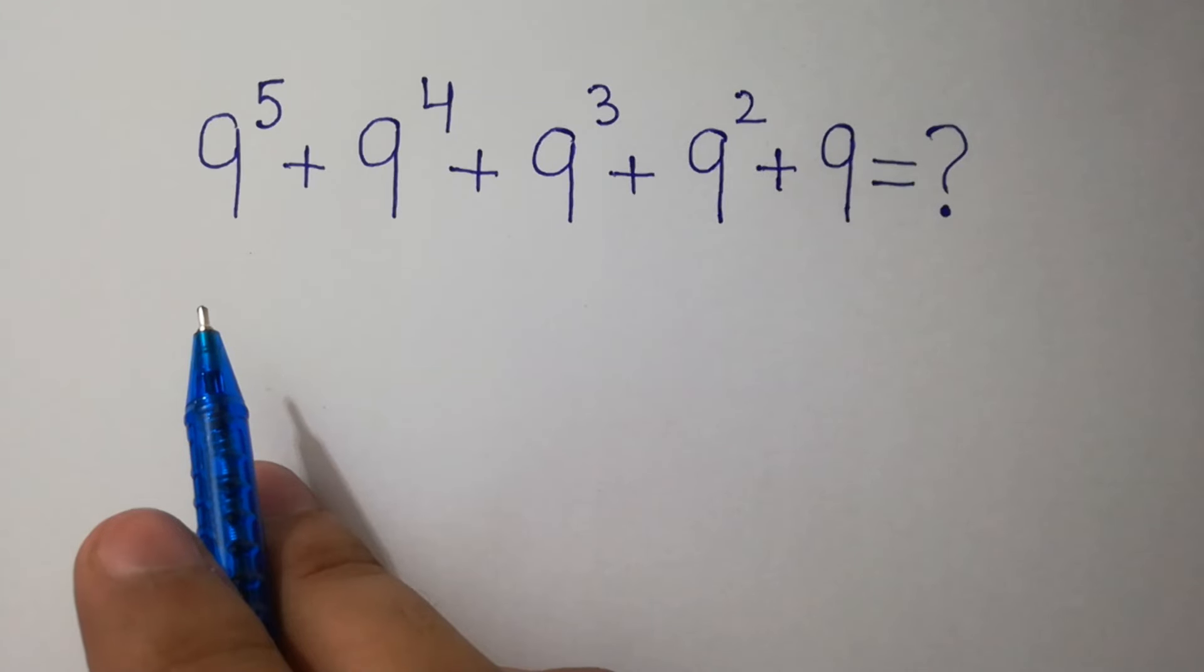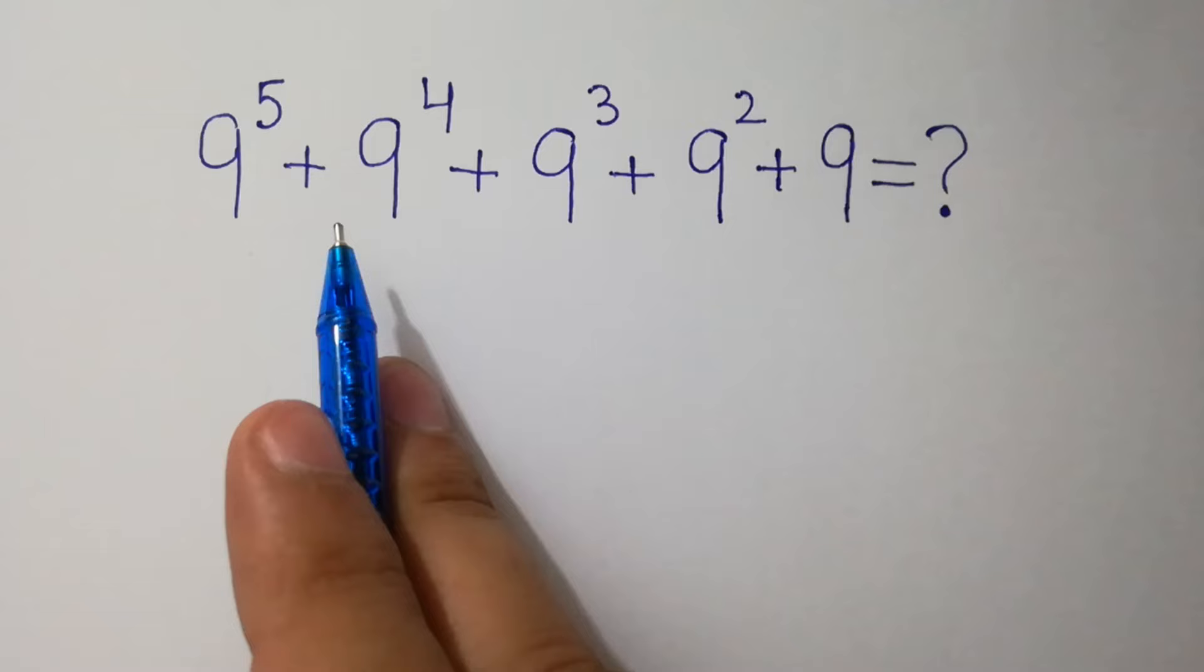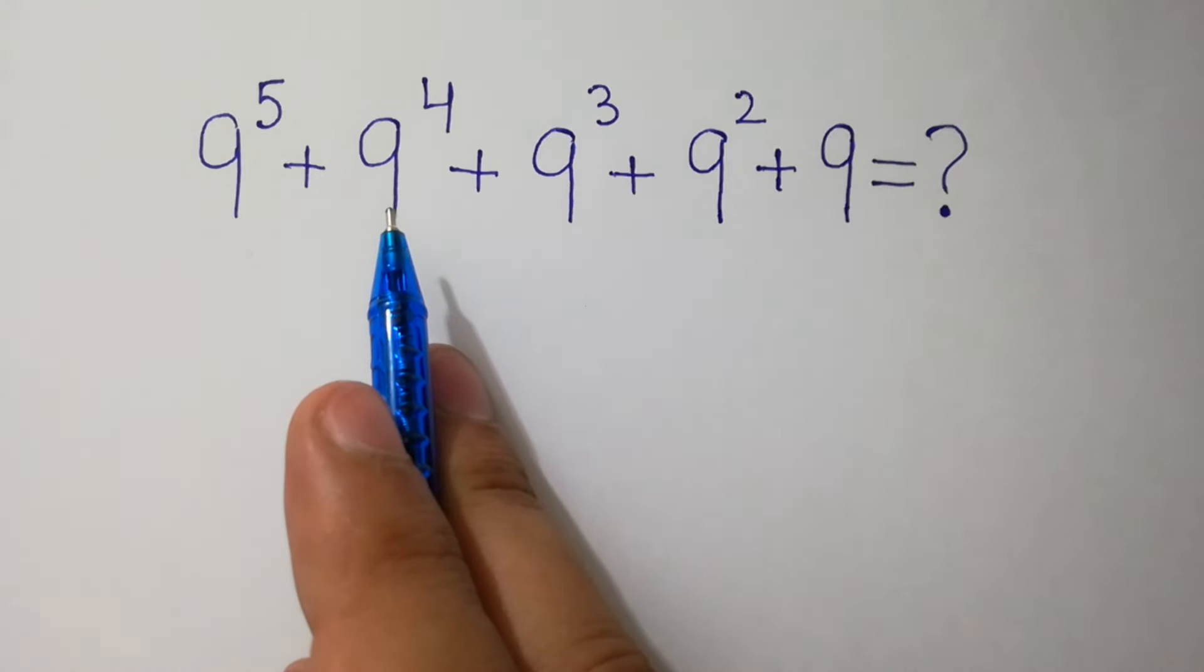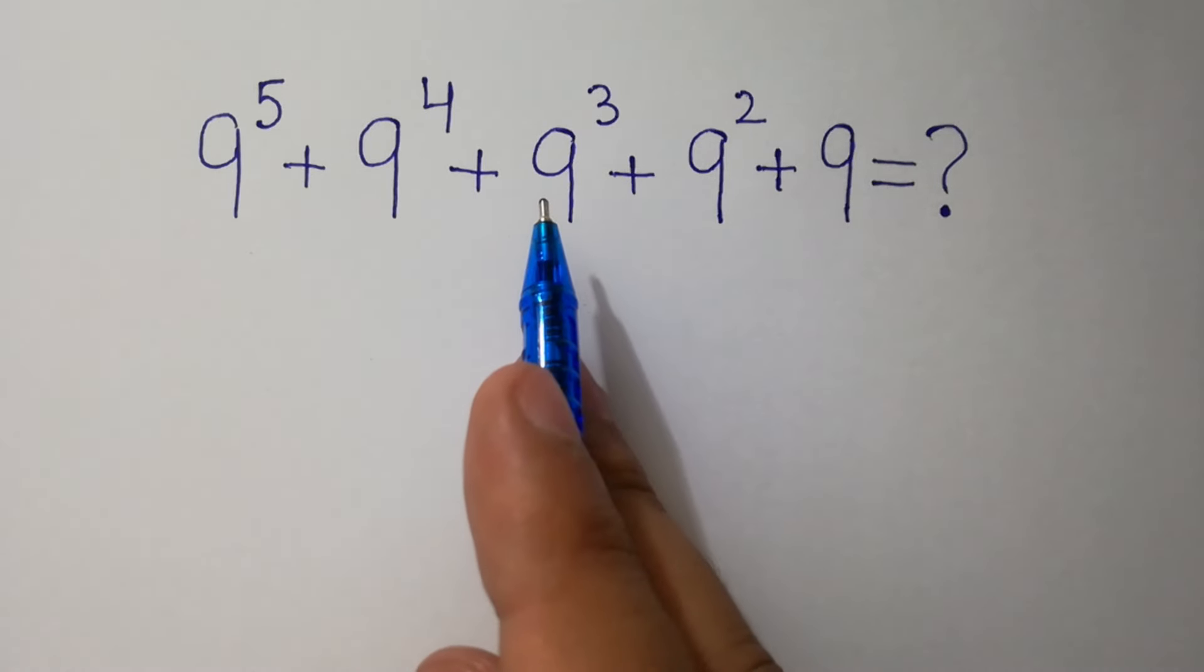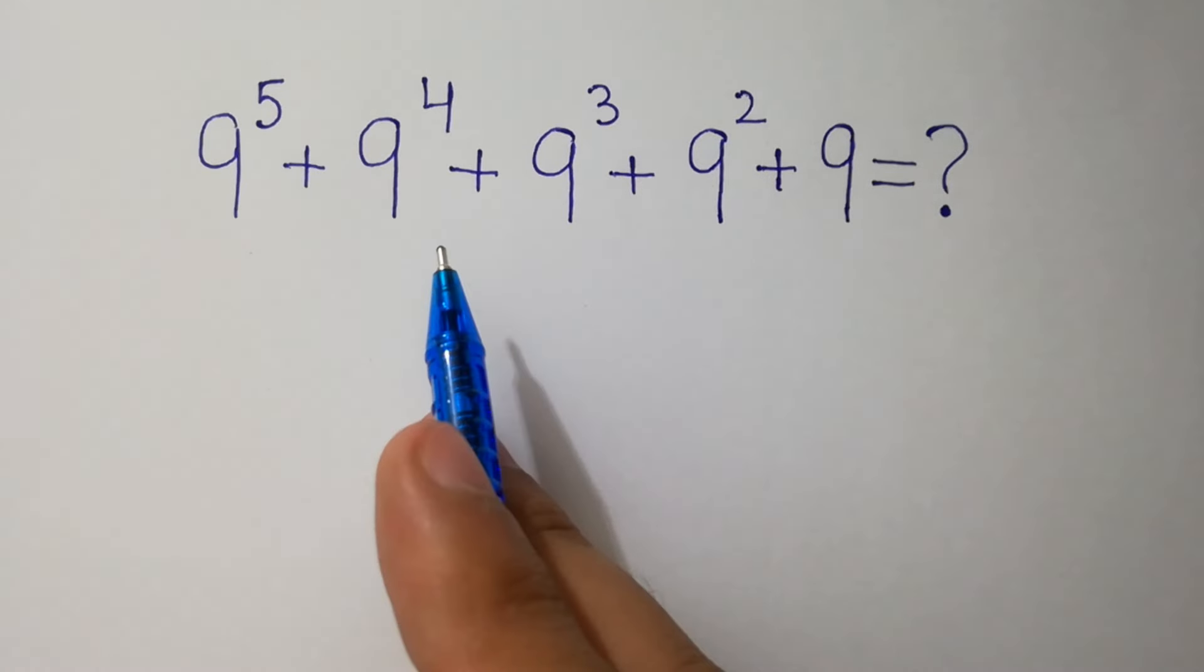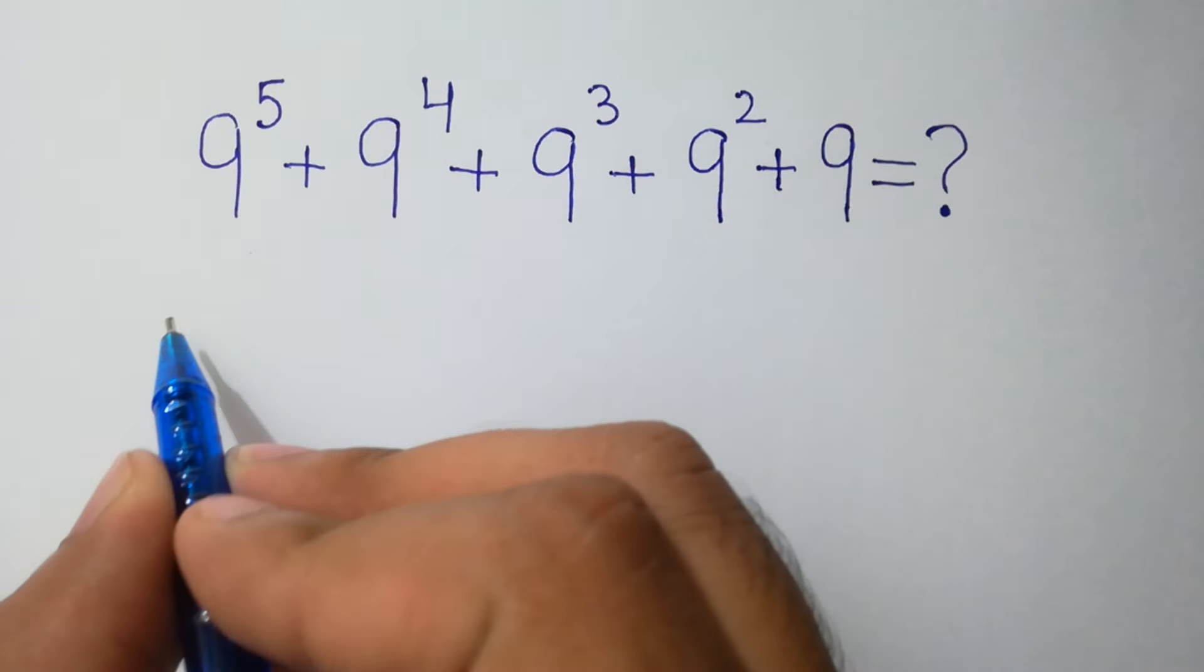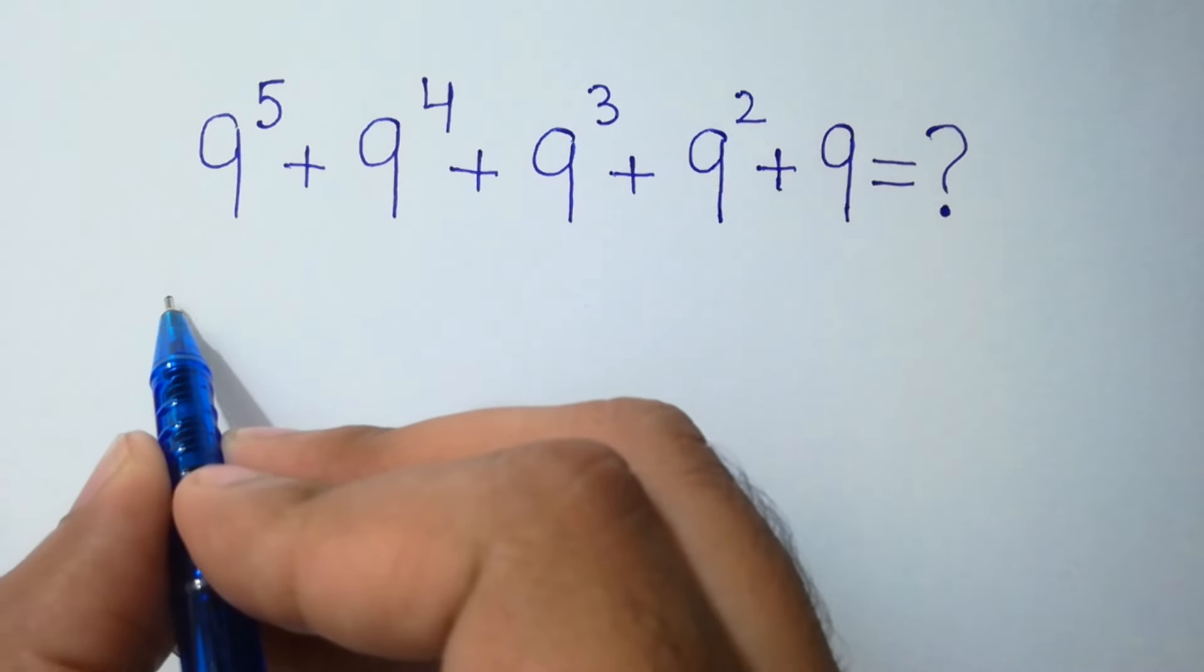Hello friends, can you solve this without using a calculator? 9 to the power 5 plus 9 to the power 4 plus 9 cubed plus 9 squared plus 9 equals what? Let's solve it. We can factor out the value of 9 squared.